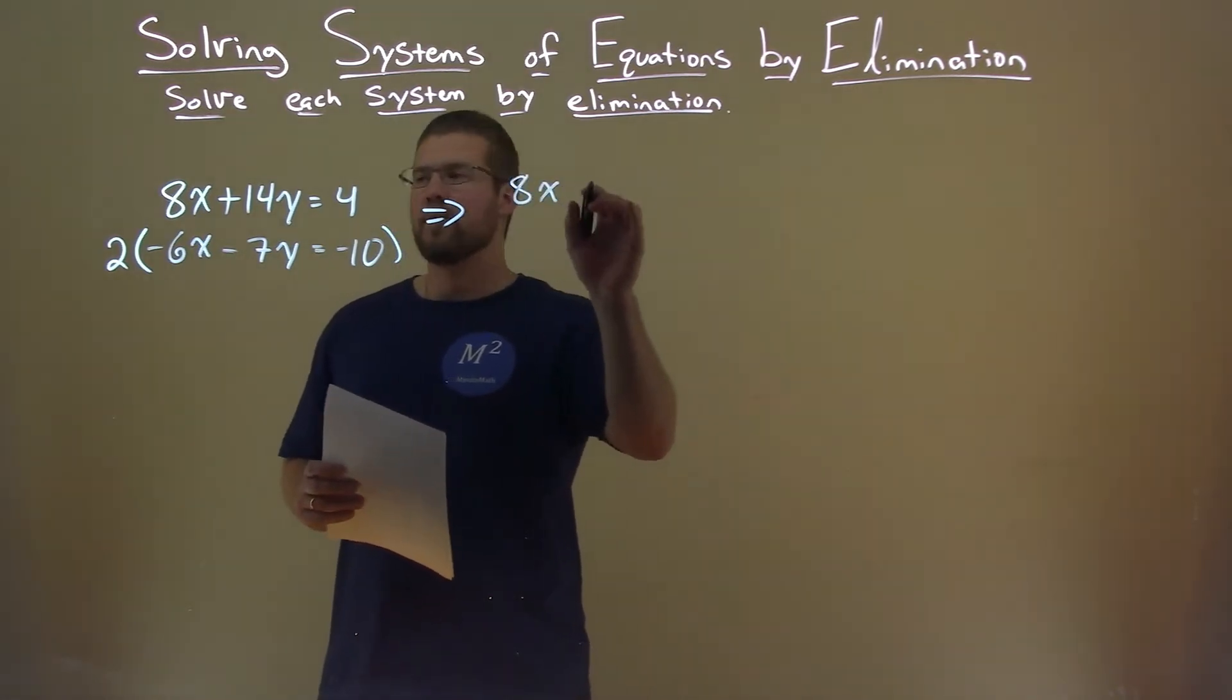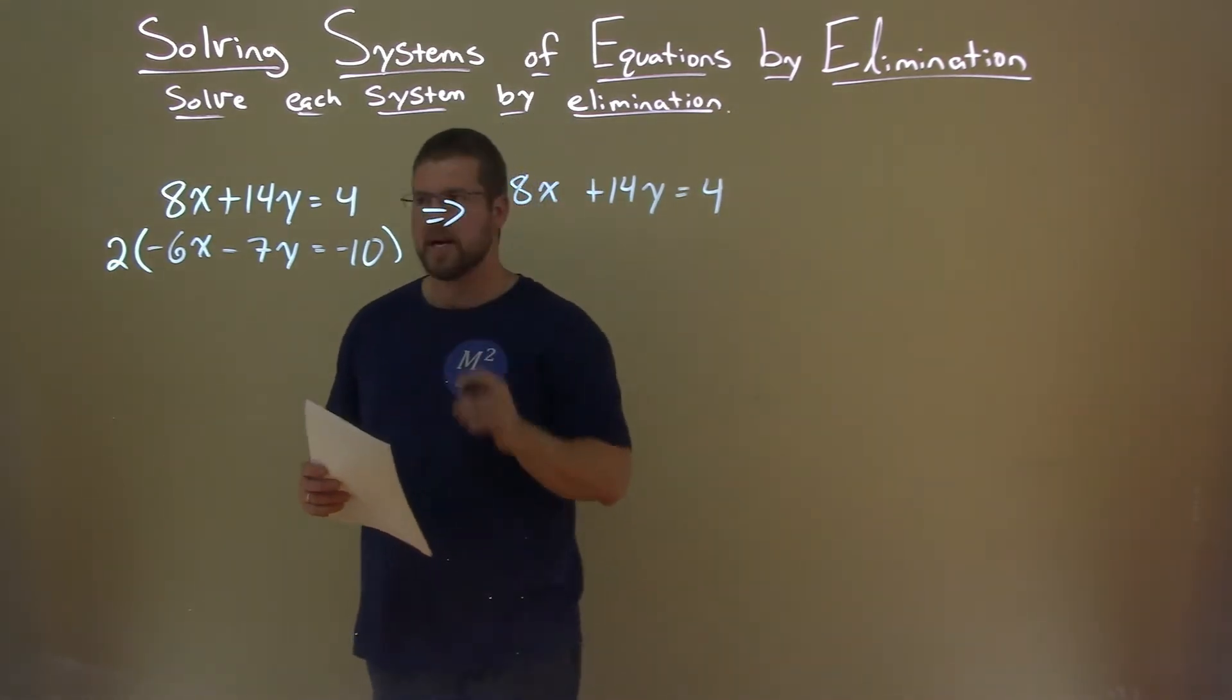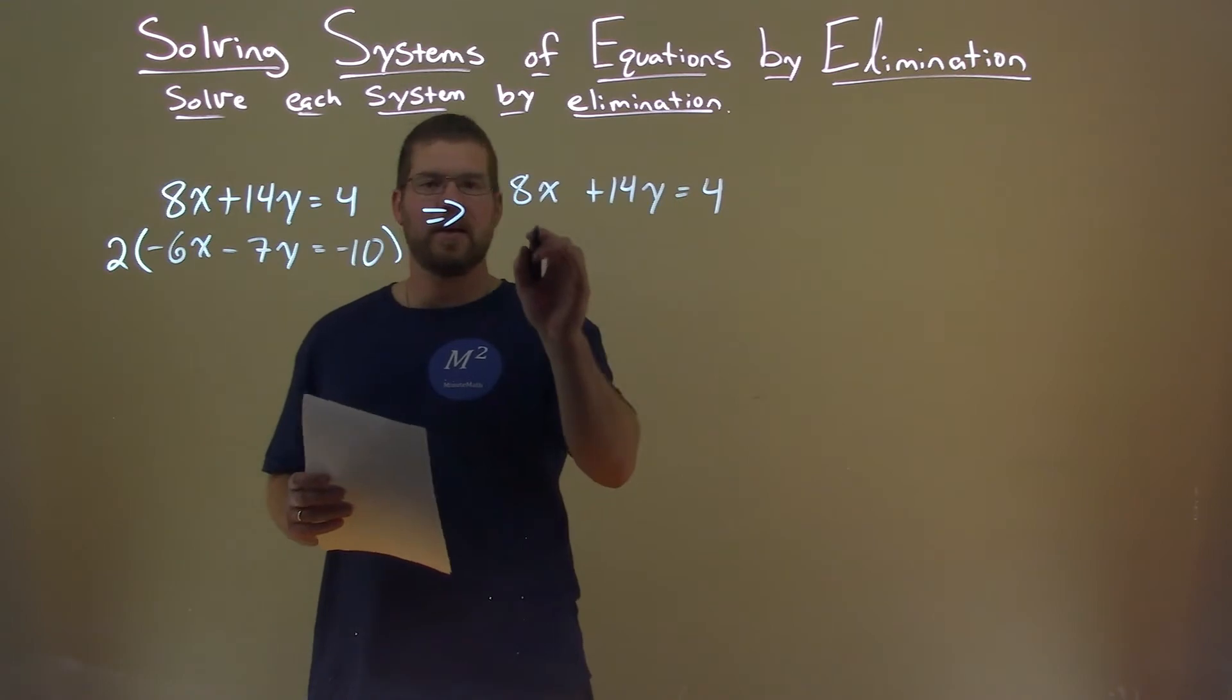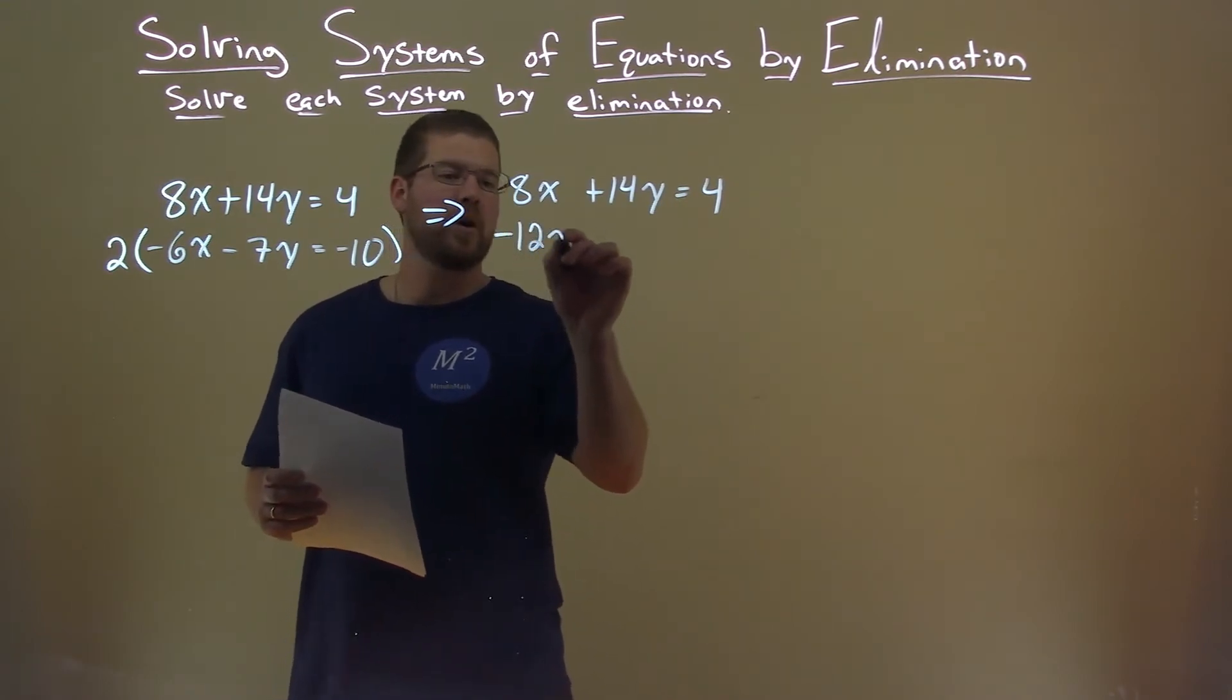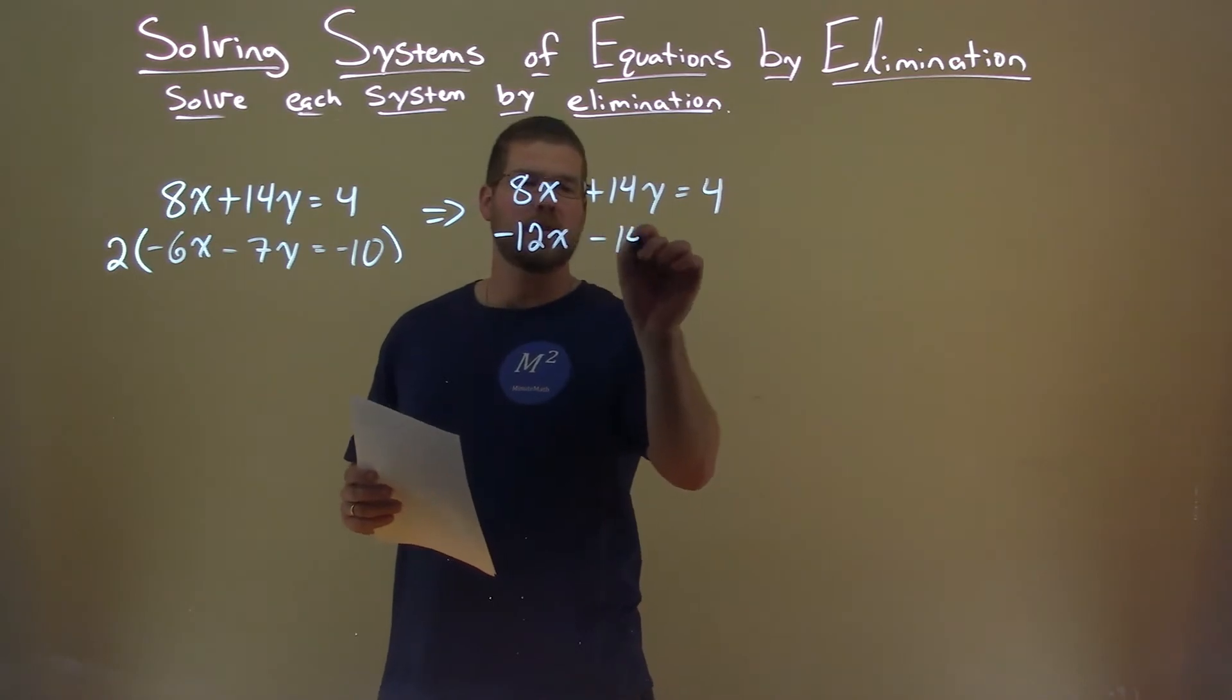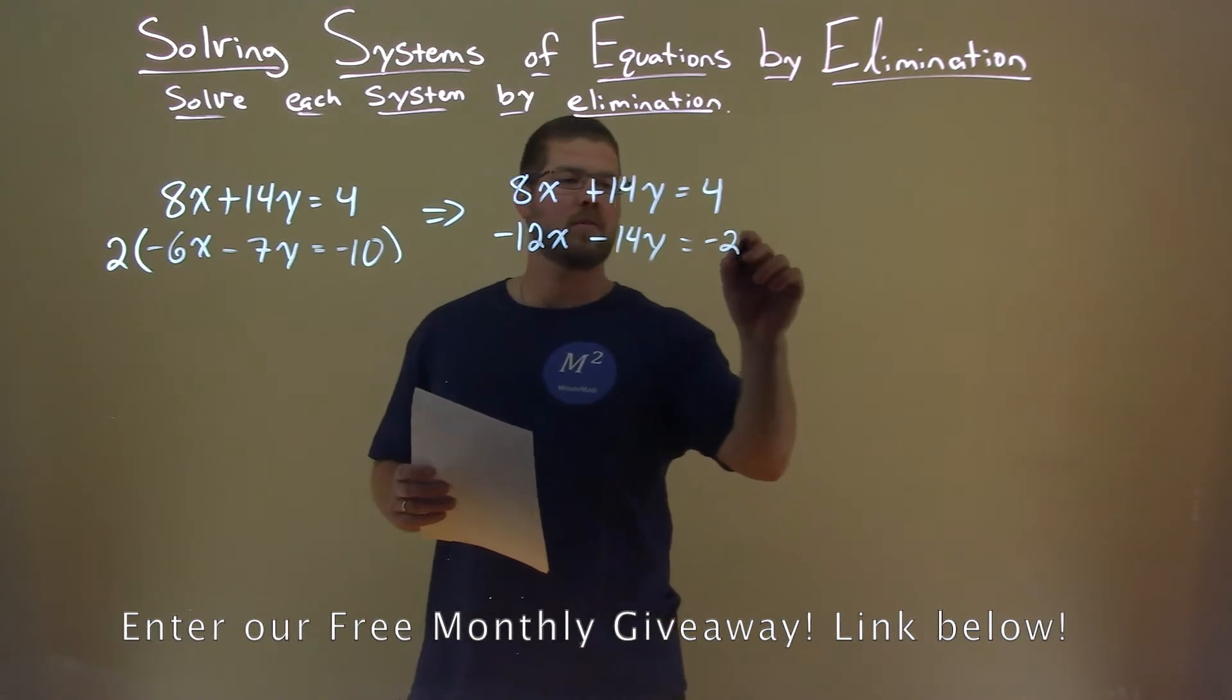Top equation comes over: 8x plus 14y equals 4. Second equation, multiply that 2 across. 2 times negative 6x is minus 12x. 2 times minus 7y is minus 14y. 2 times negative 10 is negative 20.